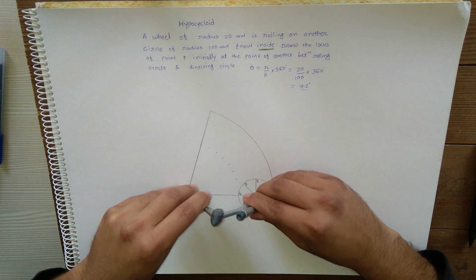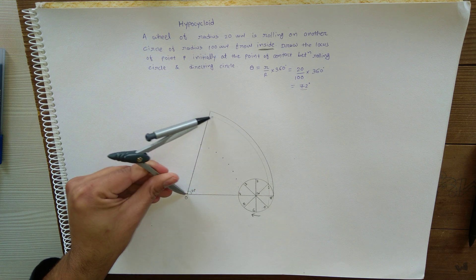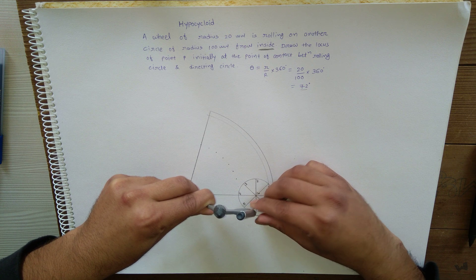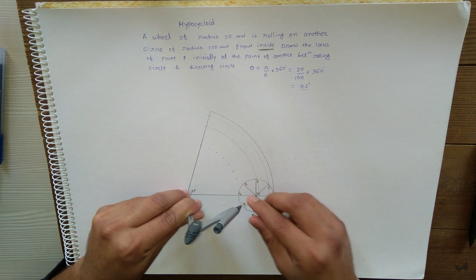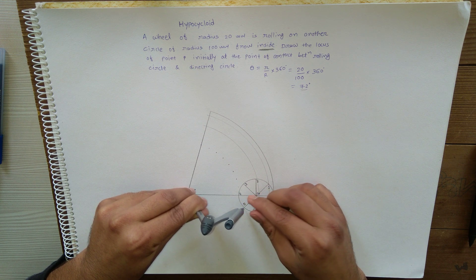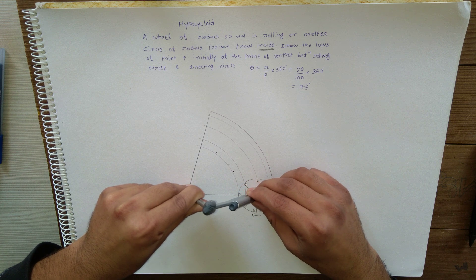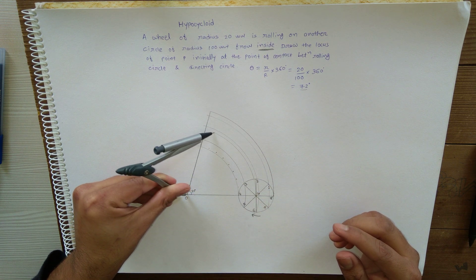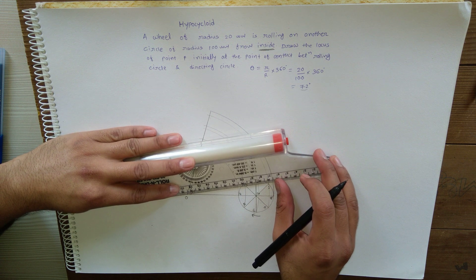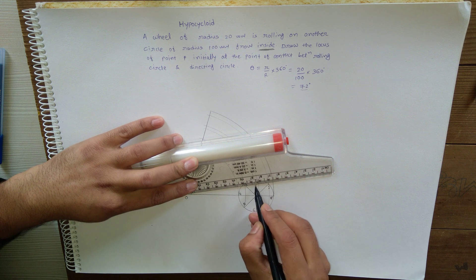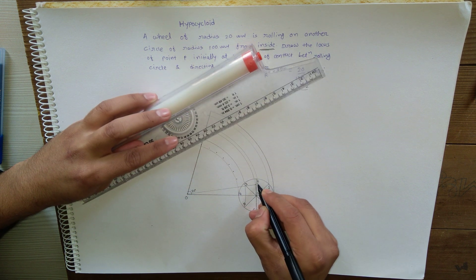Now with center O and various radii, draw arcs. C7 and 1 will share one common arc, C6 and 2 will share one common arc, 5 and 3, and then 4. Also draw one arc from the center to mark different positions of the center C1, C2, C3. Now draw lines up to the central arc and mark different positions of the center.